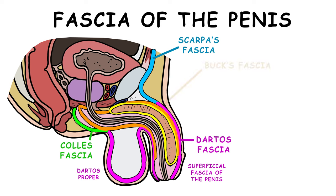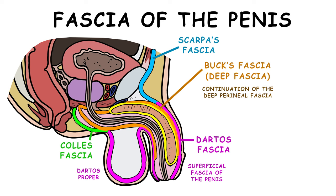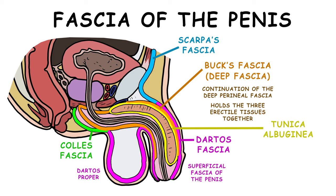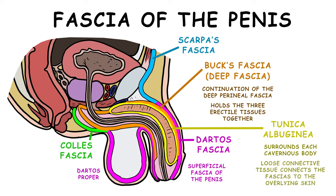Going deeper, we see Buck's fascia, also known as the deep fascia of the penis. It is a continuation of the deep perineal fascia and holds the three erectile tissues together. Finally, beneath the deep fascia is the tunica albuginea, a strong fascia surrounding each cavernous body that is fused at the midline of the penis. Loose connective tissue connects the fascias to the overlying skin.